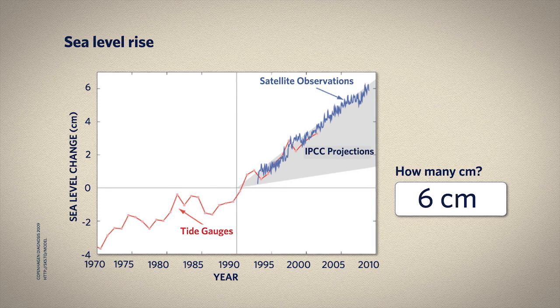This is, of course, a global average. You might actually live in an area where, locally, sea level is falling, because the land surface you live on is rising. Or you might live in an area where sea level is rising faster than the global average, if the land you live on is subsiding at the same time. It's worth finding out what's happening where you live. As a comparison, during the transition from the last ice age to the present warm period, the rate of sea level rise was sometimes much higher than our present 3.1 millimeters per year, up to 10 millimeters per year or higher.